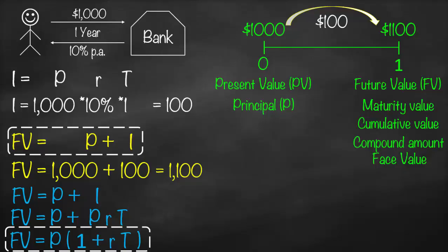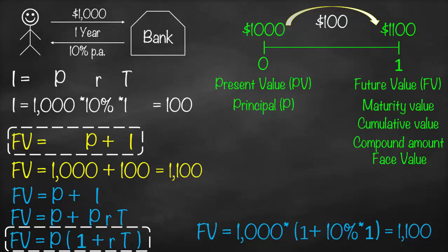So just substitute directly into the second formula. Our future value equals a principal of a thousand dollars multiplied by open bracket one plus a simple interest rate of 10% times a time of one year close bracket. This gives us eleven hundred dollars, which is exactly the same amount we calculated earlier.